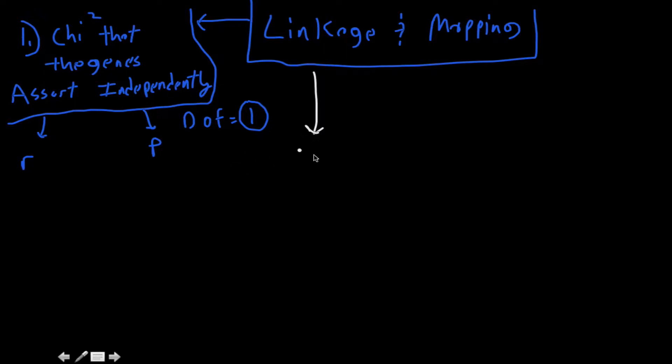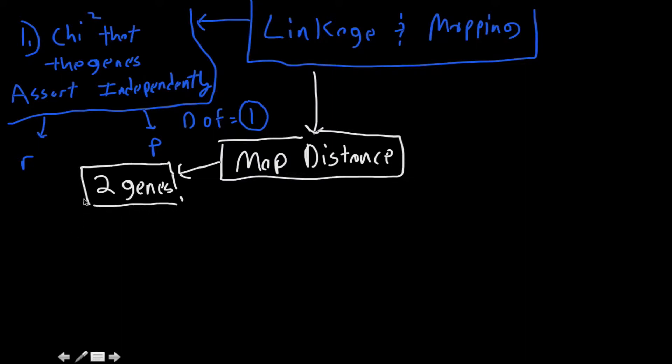So you're going to do your crosses, and I'll do a video on how to do that from a set of data, but first thing we need to do is calculate map distance. How do we calculate map distance? Well, this is map distance only with two genes. You can't calculate map distance accurately if you're not putting this into groups of two.